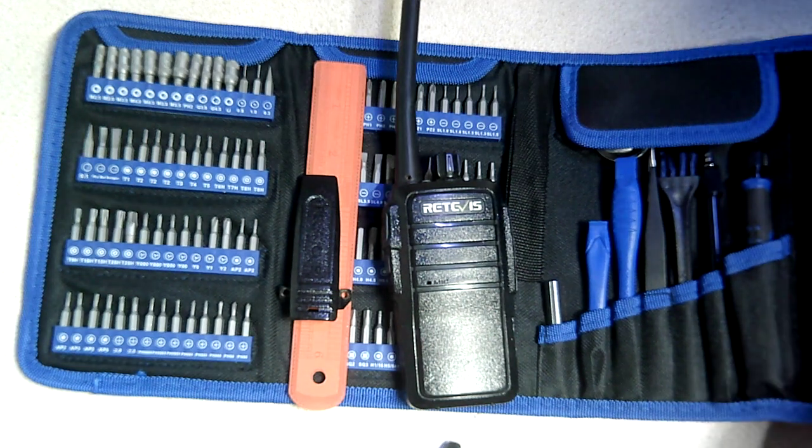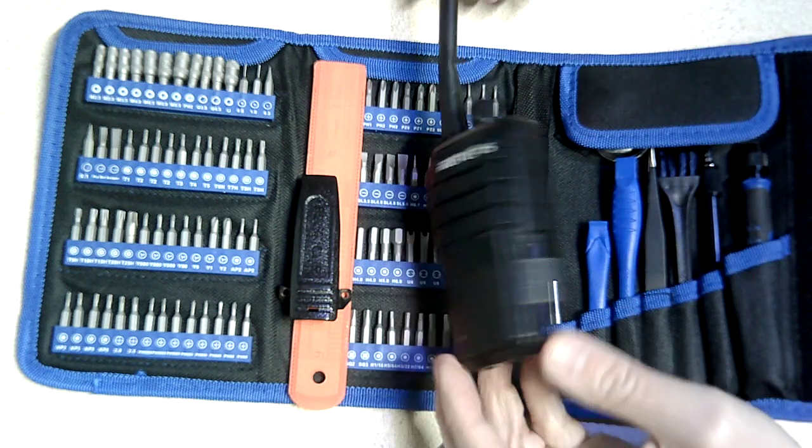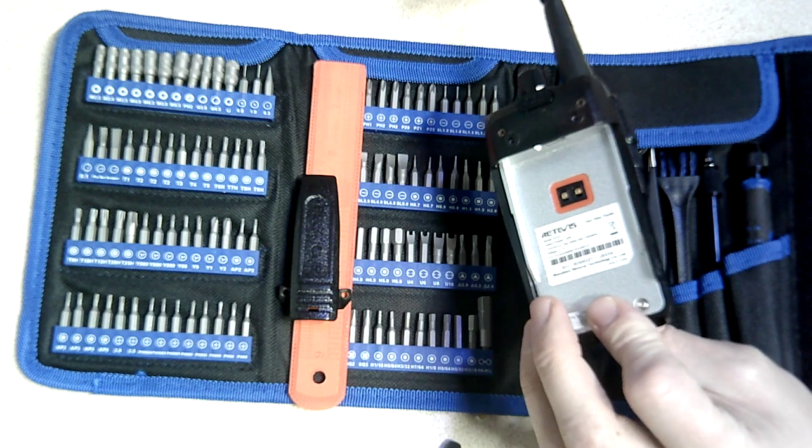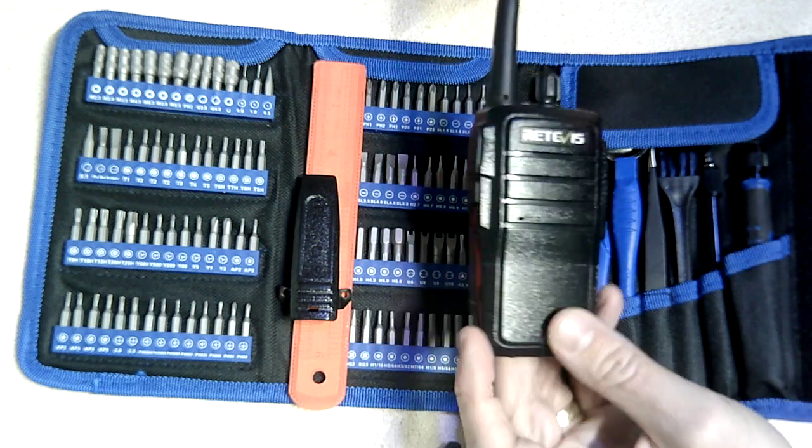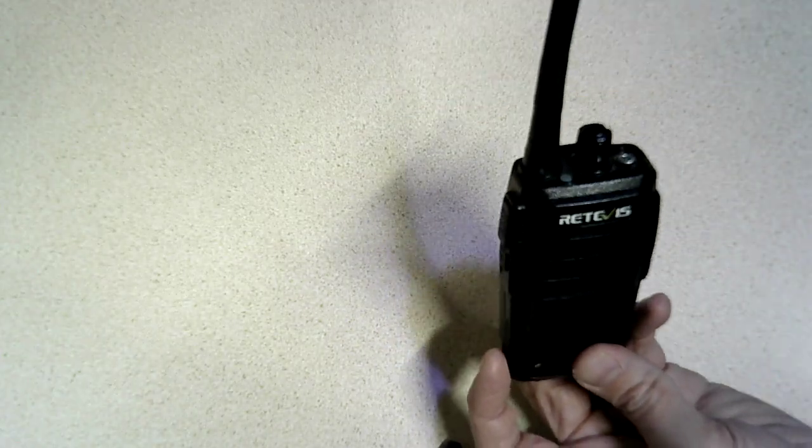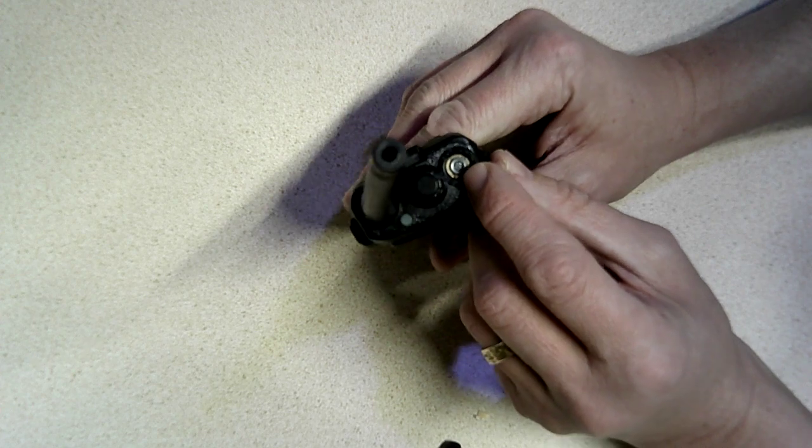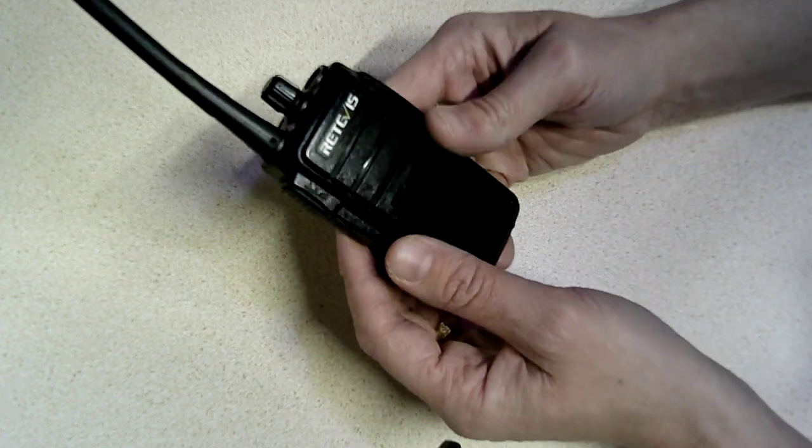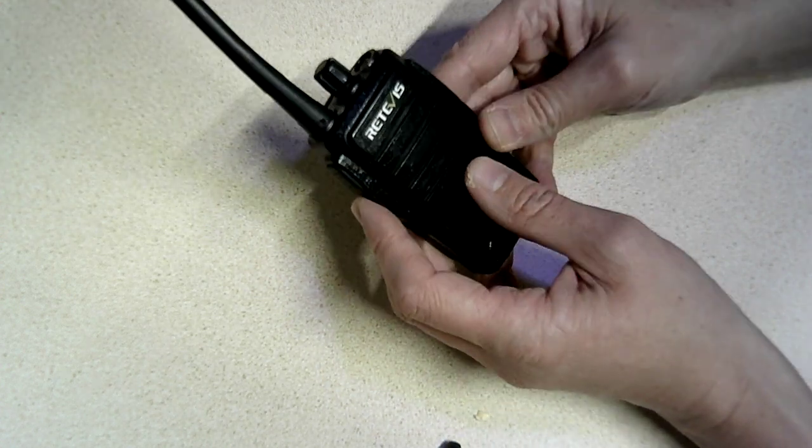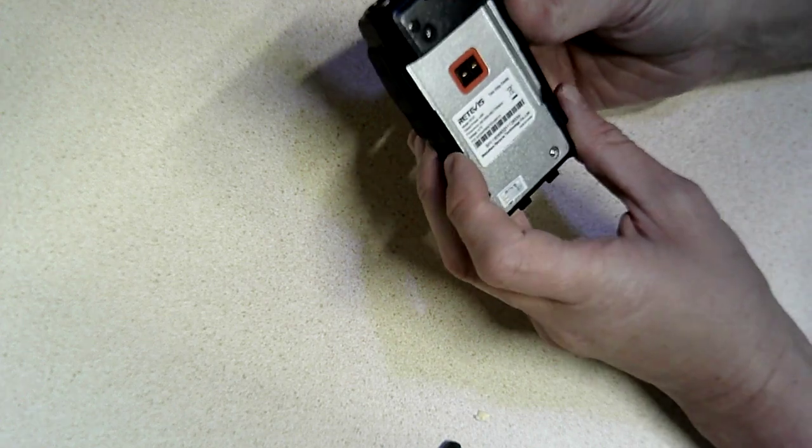All right, well today we're going to do something I think is interesting and we're going to disassemble a Retevis RT21 radio and take a look and see what's going on inside. So this is a radio I got second hand in a batch and actually the volume button has broken off on it, so no working Retevis radios were harmed in the production of this video.